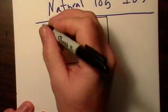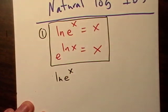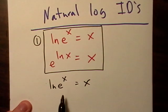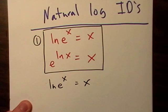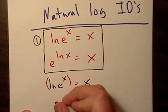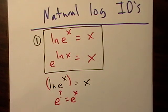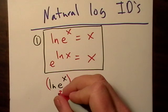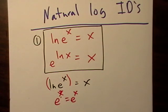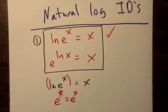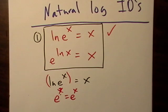Natural log of e to the x, and that being equal to x. Remember what this means right here. This basically means e to the what equals e to the x. Okay, well you can probably convince yourself that that what is x. So that one's pretty easy to kind of get around.